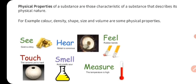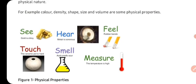Physical properties ko aap dekh sakte ho, sun sakte ho, you can feel it, you can touch it, smell kar sakte ho, and measure kar sakte ho. Jaisi ki aap yahan pe dekh sakte ho — gold is shiny. Yeh jo shiny appearance hai, yeh gold ki physical property hai jise hum apni aankhon se dekh sakte hai. Metal is sonorous — metal ko aap hit karte hai to usse sound produce hoti hai, jo aap hear karte hai. Rubber ko aap bend karte hai to you can feel it — yeh bend hone ki property bhi physical property hai. Ceramic pot is hard — agar aap kisi cheez ko touch karte hai to uski hardness, softness, yeh physical property hogi.